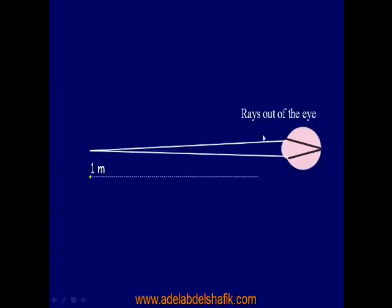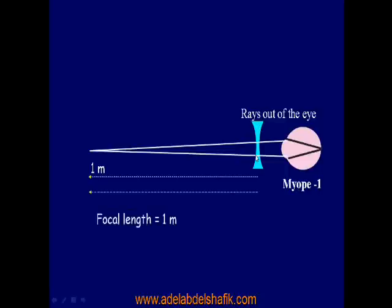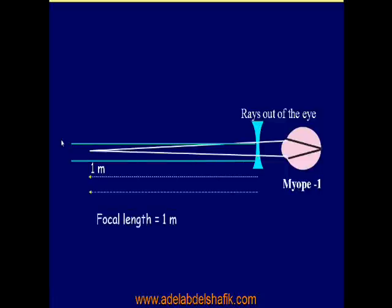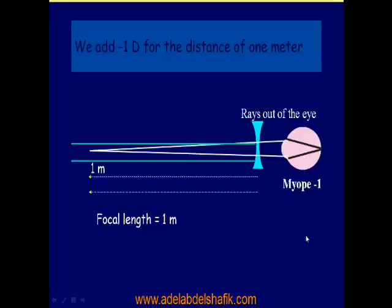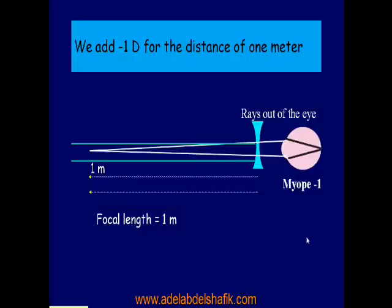Now, we have an eye whose rays are focused at one meter — where the doctor is sitting. To correct this, we recognize this as myopia of minus one. We put a lens power of minus one to make rays coming out parallel. If we add minus one to such a system, we change the eye from being myopia minus one into an emmetrope. This explains why we add a power of minus one for the working distance of one meter.